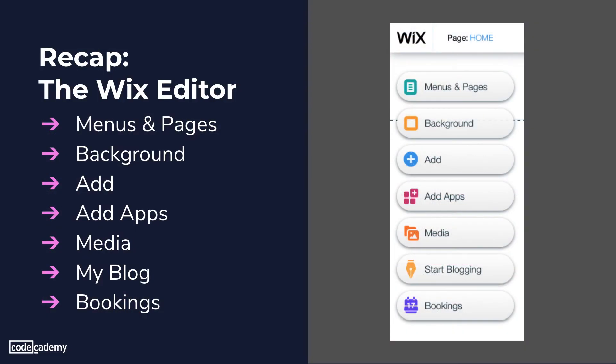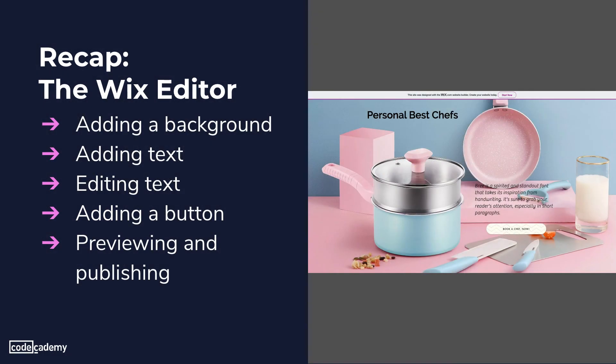We learned the Wix Editor has several sections to choose from to help us build a website: Menu and Pages, Background, Add, Add Apps, Media, My Blog, and Bookings. We then learned how to add a background to a website, how to add and edit text, and how to add a button for bookings. Lastly, we learned how to preview a website before putting it live on the internet, then publish it with the Publish button to share it. So great work — you now know everything you need to get started with Wix.